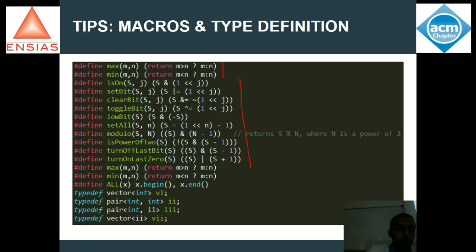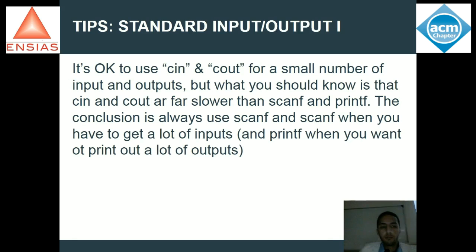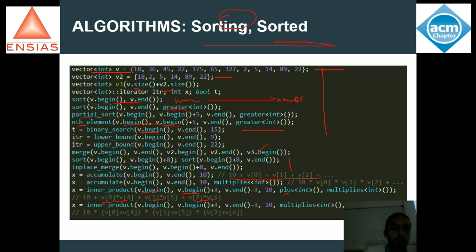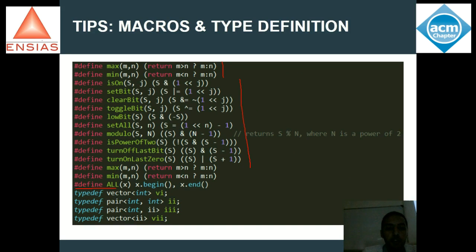Ça devient vraiment très facile. J'ai aussi défini un 'all'. Pourquoi j'ai fait ce 'all' ? Car à tout moment j'utilise beaucoup V.begin et V.n, donc ça prend du temps. Dans les compétitions, il s'agit vraiment de la vitesse. Parfois il y a juste deux secondes de différence entre quelqu'un qui résout un problème et l'autre. Donc la vitesse est vraiment un facteur très important dans les compétitions, il faut bien se bénéficier des macros et des type définitions.